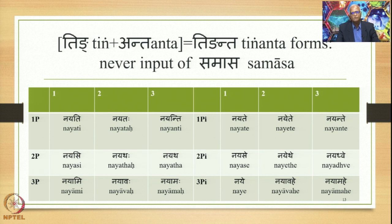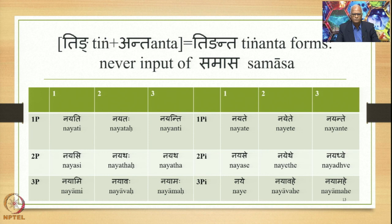These are the tinganta forms — ting-anta, tinganta. The forms are: Nayati, Nayataha, Nayanti, Nayasi, Nayataha, Nayatha, Nayami, Nayavaha, Nayamaha. And the atmanepada forms are: Nayate, Nayate, Nayante, Nayase, Nayataha, Nayataha, Nayamaha. In contrast with these nine atmanepada forms, the other nine forms are termed as parasmaipada. These are the tinganta words, and the most important point to be remembered is that they never become an input of a Samasa.